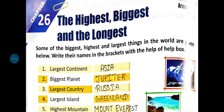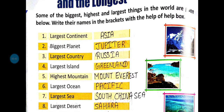Good morning everyone, hope you all are fine and safe at your homes. Kids, today in GK we will be completing a new chapter — chapter number 26. The name of the chapter is 'The Highest, Biggest and the Longest'. Highest means sabse ucha, biggest means sabse bada, and longest means sabse lamba. Some of the biggest, highest and largest things in the world are given below. Write their names in the brackets with the help of the help box.